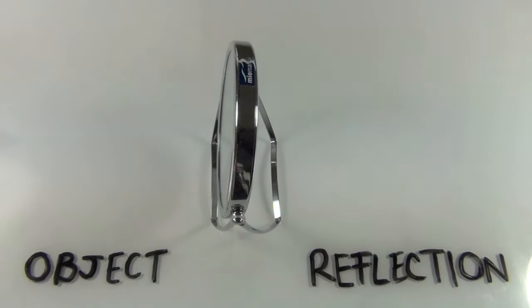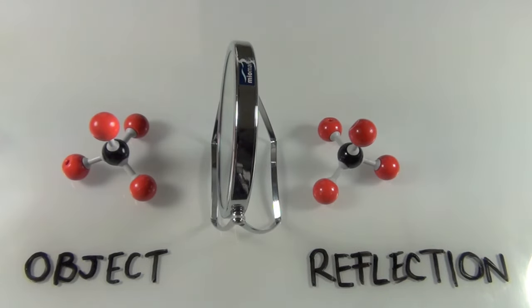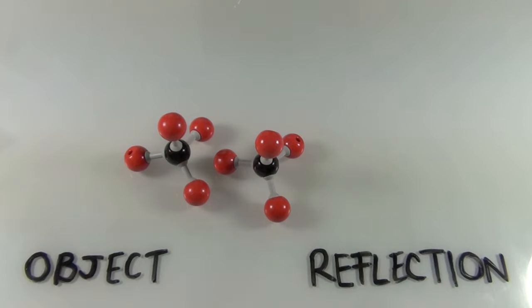Now moving on to some kind of hypothetical molecule, we have the object and its reflection. And again, we can very easily see that the object is identical to its reflection.